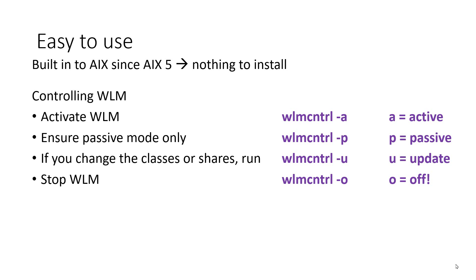There's nothing to install. AIX 5, 6, and 7.3 all have this built in. To activate it, we use the 'wlmcntrl' command — the developer seems to have had something wrong with the O key, since it's missing two O's, but there it is. Use '-a' to activate it. '-p' for passive mode, which means activate it but don't start controlling things, so you can see how workloads are behaving right now. If you change configuration files, use '-u' to update — it reads those files and carries on running. And to stop it, it's '-o', perhaps for 'off'.